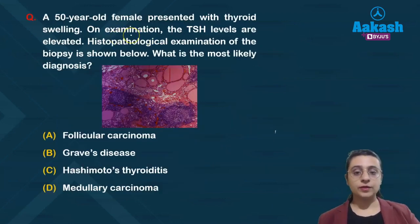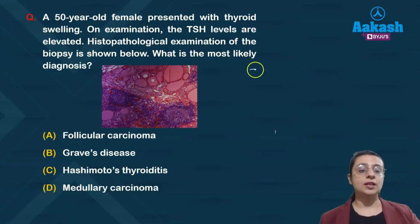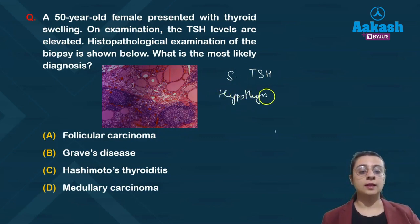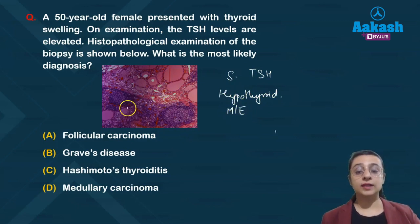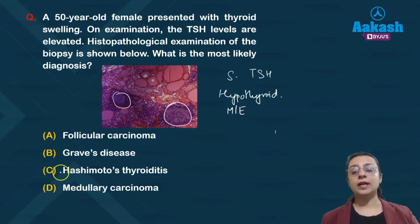For example, a 50-year-old female presenting with thyroid swelling and elevated TSH levels — indicating hypothyroidism — with characteristic microscopic appearance showing disrupted follicles and lymphoplasmacytic infiltrate: the diagnosis is Hashimoto's thyroiditis.